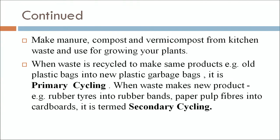When waste is recycled to make the same product — for example, old plastic bags into new plastic garbage bags — it is called primary cycling. When waste makes a new product — for example, rubber tires into rubber bands, or paper pulp fibres into cardboard — it is termed secondary cycling.